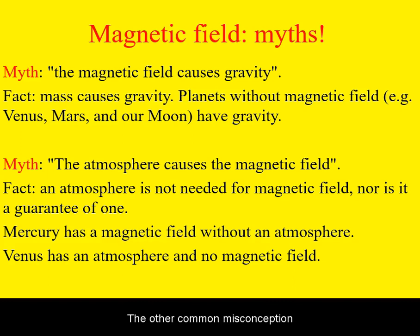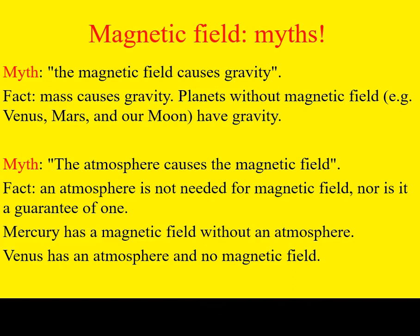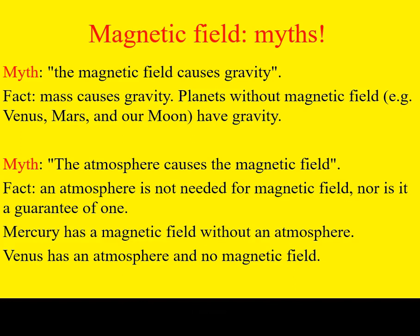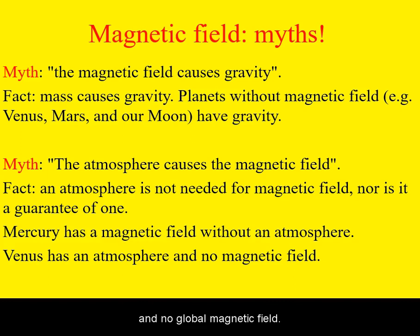The other common misconception is the presence of an atmosphere versus a magnetic field. Again, these are not directly related. An atmosphere is not a precondition to generate a magnetic field, and the presence of an atmosphere does not guarantee a magnetic field. There can be planets with a magnetic field that have no atmosphere, and planets that have an atmosphere and no global magnetic field.